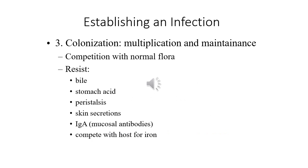Following binding, there is a process called colonization. Adherence occurs on the surface of our tissues or cells, and it requires multiplication and maintenance of the population. With colonization and multiplication, microbes can compete with the normal flora and resist the body's innate immune responses — mechanisms such as stomach acid (HCl, pH range 1.5–4.5), peristalsis, skin secretions, IgA antibodies, and iron availability.